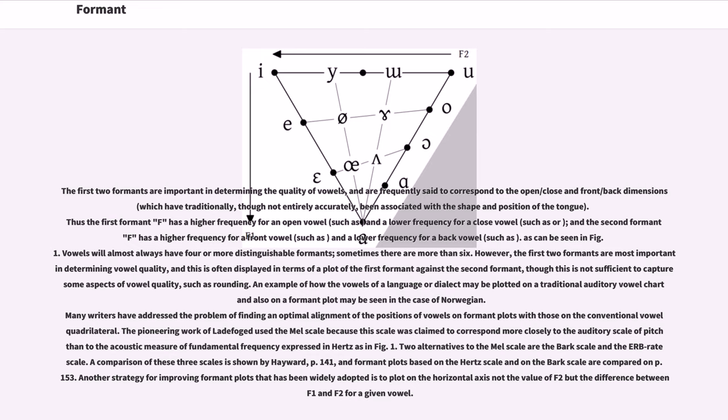The second formant F2 has a higher frequency for a front vowel and a lower frequency for a back vowel. As can be seen in figure 1.